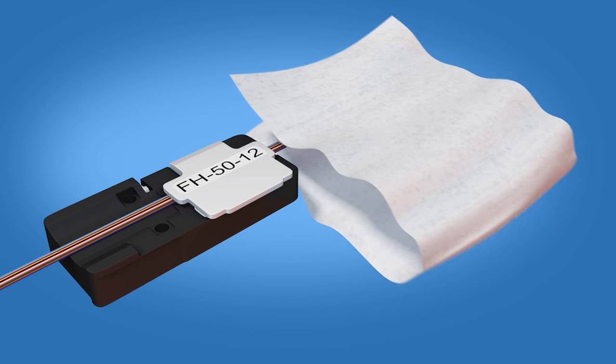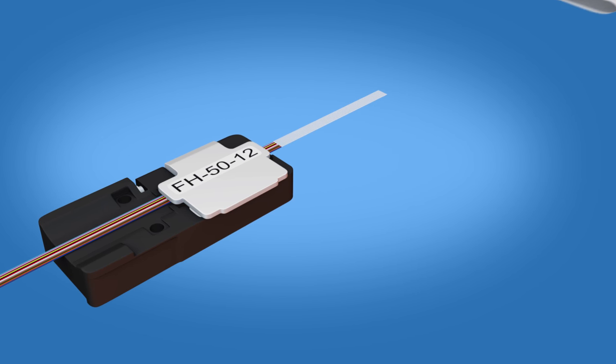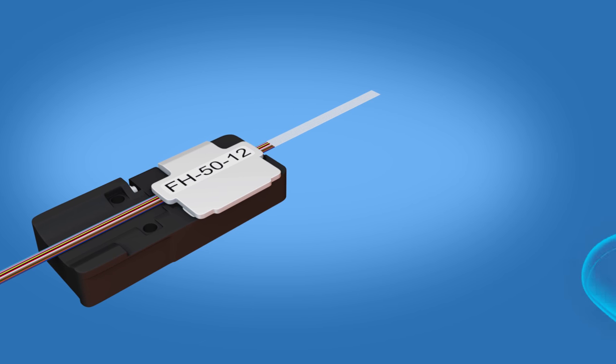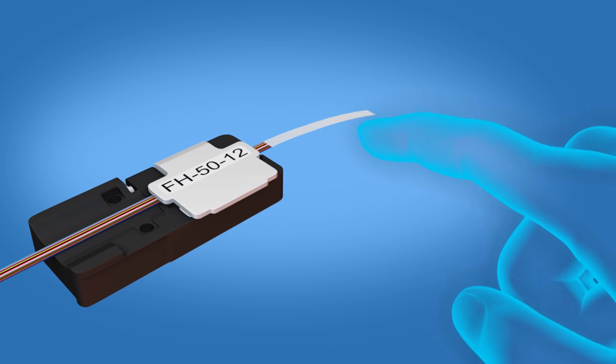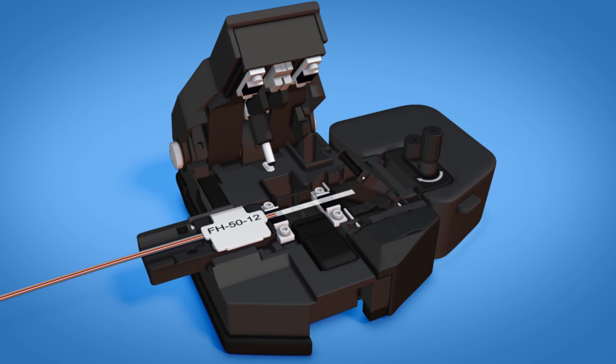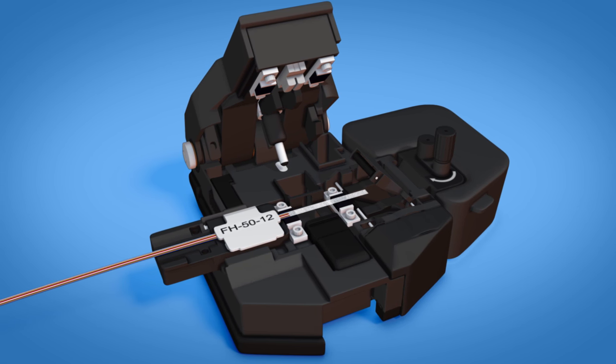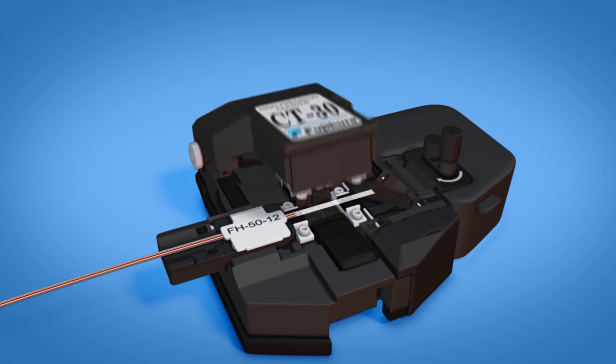Clean the stripped fiber with a lint-free wipe and fiber preparation fluid. Make sure the fibers are dry and separated. Flick the fibers to ensure their integrity. Place the fiber holder into the cleaver. The fiber holder should be flush and flat in the cleaver. Cleave the fiber.